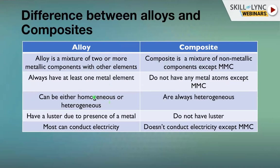In some cases, like functionally graded materials, alloys can become heterogeneous. Metallic materials are isotropic — properties are the same in all directions. But composites are always heterogeneous because you combine different materials: the matrix, fiber, and reinforcement all differ, so properties are not the same in all directions.